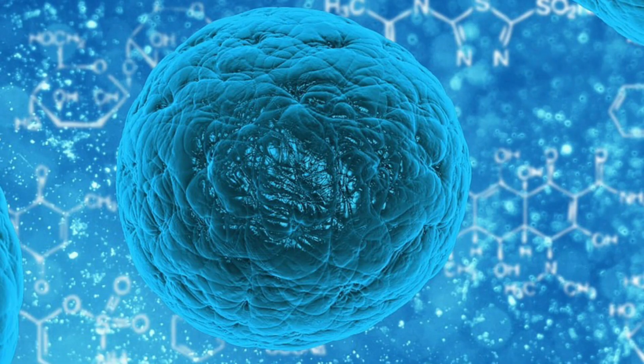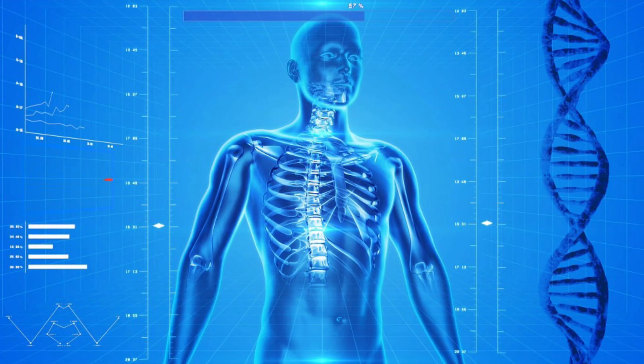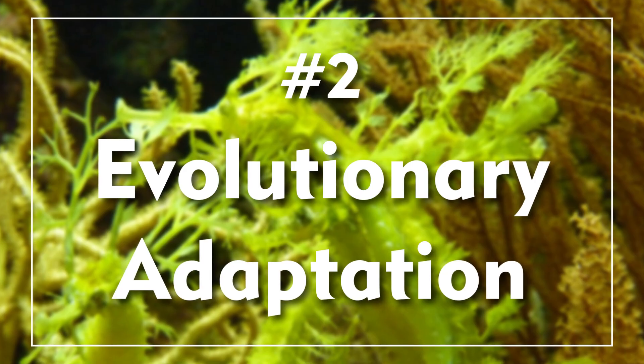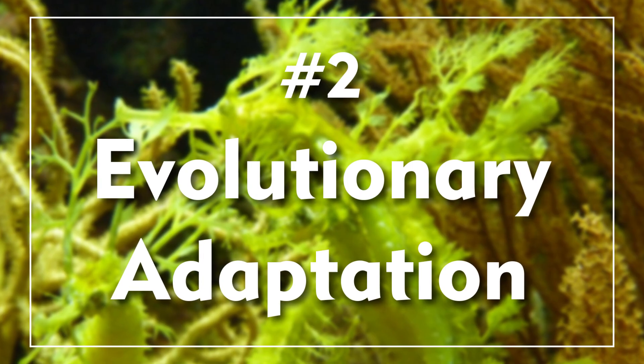Number one: order. Living things are structured on almost every level, whether you're looking at the cellular level or zooming out to look at total body structure. This hierarchical, leveled nature of living things is what allows them to exist in such amazing forms. Number two: evolutionary adaptation. Living things change over time in ways that are adapted to the environment. Evolution is the mechanism that does it all. How incredible is change when you really think about it?